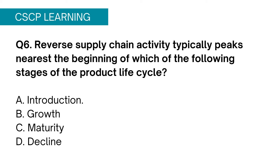Question 6: Reverse supply chain activity typically peaks nearest the beginning of which of the following stages of the product life cycle? A, introduction; B, growth; C, maturity; D, decline. Reverse supply chain is majorly used for products which have been consumed and require disposal — for example, old television sets or monitors. Think about the life cycle stage in which the product needs to be disposed of. Needless to say, it is the decline phase. Therefore Option D is the correct answer.